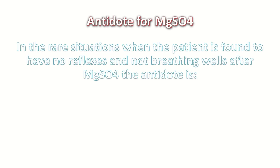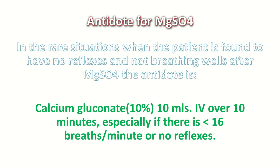When we suspect magnesium sulfate toxicity, what is the antidote? In the rare situation when a patient is found to have no reflexes and is not breathing well after magnesium sulfate, the antidote is calcium gluconate — 10%, 10 mL, given IV over 10 minutes — especially if there are less than 10 breaths per minute or no reflexes. It is very important to monitor reflexes and respiratory rate along with other vital signs.